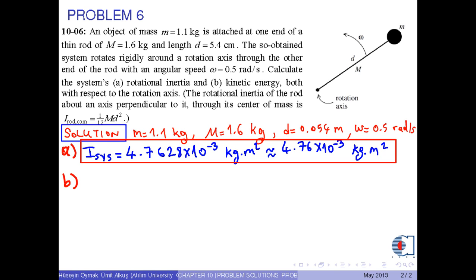To find the rotational kinetic energy of the system, we use this formula, which is 1 over 2 times I system times omega squared, where I system is the rotational inertia of the system with respect to the rotation axis, and omega is the angular speed of the system with respect to the rotation axis.